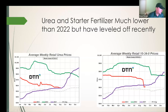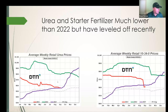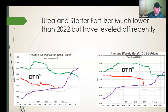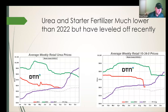Moving on to what fertilizer prices have done: looking at urea, the red line is 2023 and the green is 2022. Urea is considerably off its highs — it was over $1,000 a ton last spring and is now sitting around $550, moving sideways the last couple of weeks. With starter fertilizer 10-34-0, it came down sharply from August to September, from $700 to $600 a ton, with a slight increase in the last week — likely from concern about China's export policy.